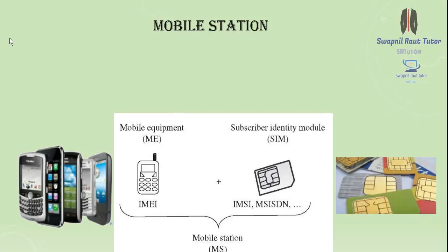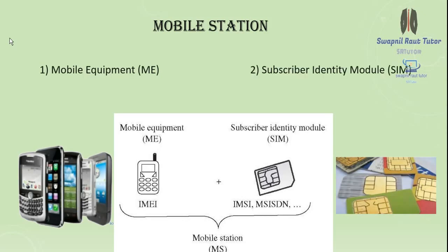The Mobile Station (MS) is our mobile phone, which consists of two entities: Mobile Equipment (ME) and SIM. The ME is a portable, vehicle-mounted, handheld device uniquely identified by an IMEI number — the International Mobile Equipment Identity number. The SIM is the Subscriber Identity Module, a smart card that allows users to send and receive calls and other subscriber services. It can be protected by a password or PIN, moved from phone to phone, and contains key information to activate the phone.